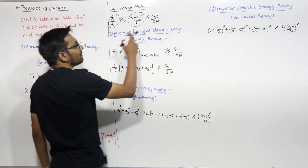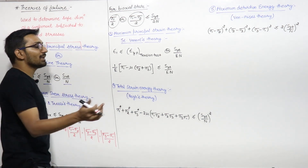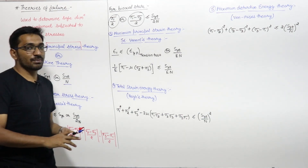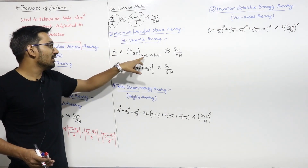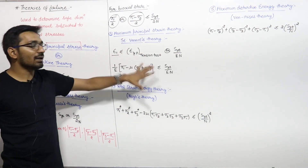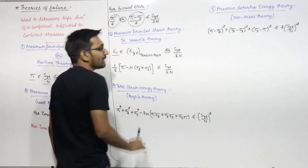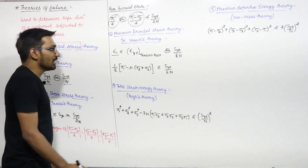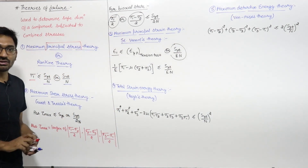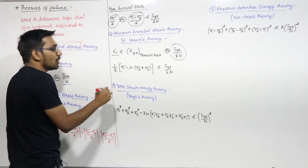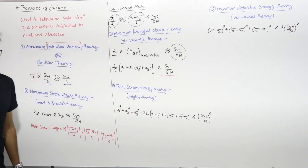The third theory is the maximum principal strain theory, also known as Saint-Venant's theory. It states that the maximum principal strain, epsilon 1, should be less than or equal to the yielding strain under a tension test, which is SYT divided by (E × N), where E is Young's modulus of elasticity and N is the factor of safety. The formula for epsilon 1 is (1/E) × (sigma 1 − mu × (sigma 2 + sigma 3)), and that should be less than or equal to SYT by N. From here, you can calculate the dimensions.